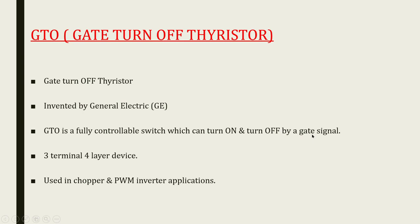In power MOSFETs and IGBTs, turning on is done using a gate signal. In normal thyristors, they are also turned on by a gate signal, but they cannot be turned off by a gate signal — making them half-controlled switches. In the case of GTO, it is a fully controllable switch where we can turn on and turn off using a gate signal.